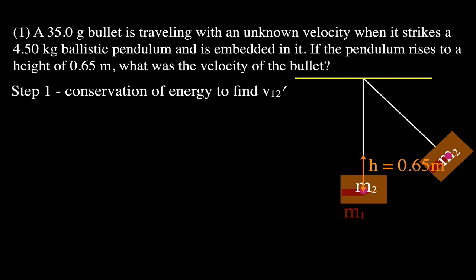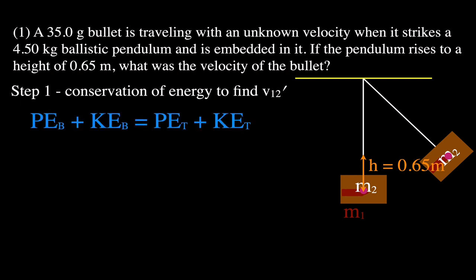The first step in this problem, we're going to use conservation of energy to find the velocity of the bullet-pendulum system. The bullet is m1, the pendulum is m2, and the prime mark tells us we're finding the velocity of that combined system after the bullet embeds itself. Conservation of energy tells us that kinetic energy plus potential energy at the bottom equals potential energy at the top plus kinetic energy at the top. At the bottom, the ballistic pendulum has no height, so it has no potential energy — that term is zero.